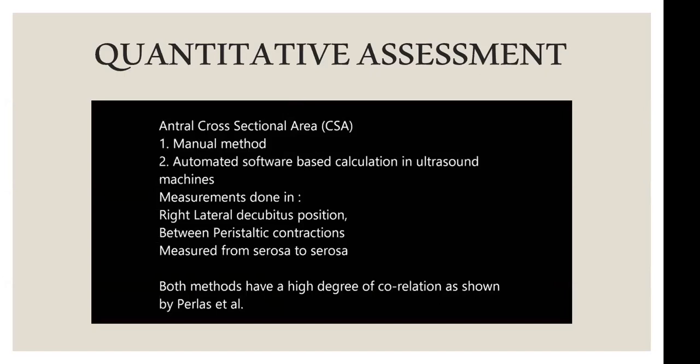For quantitative assessment, the antral cross-sectional area (CSA) is measured. Using calipers on the ultrasound machine, you manually trace around the cross-sectional area of the antrum. Manual methods and automated inbuilt software are both available. The CSA is then entered into formulas developed for both pediatric and adult age groups to calculate estimated gastric volume. This measurement is performed in the right lateral decubitus position, as it is more sensitive for the amount of content present. The measurement is taken from serosa to serosa.